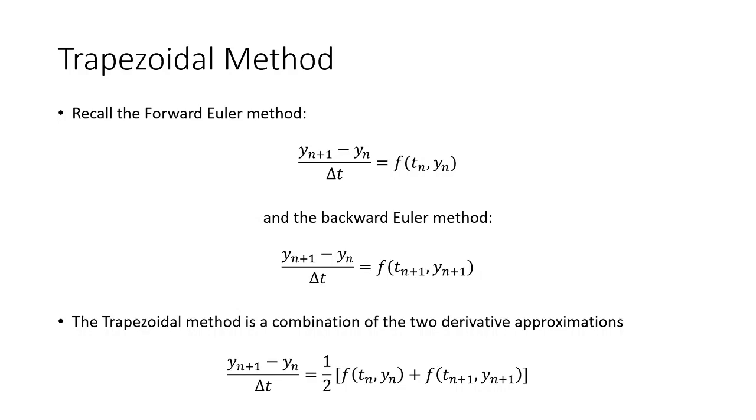So you can see it kind of looks like an average of the forward Euler method and the backward Euler method. It's not a true average because of the implicit nature of the backward Euler term. But we can think of it as a combination of the two in that sense.